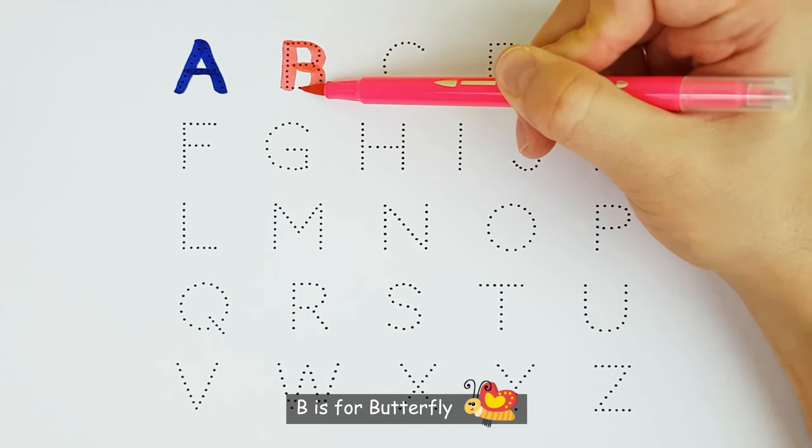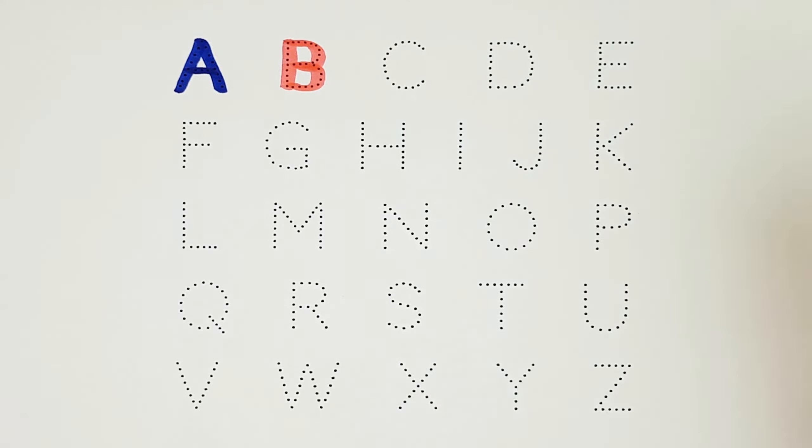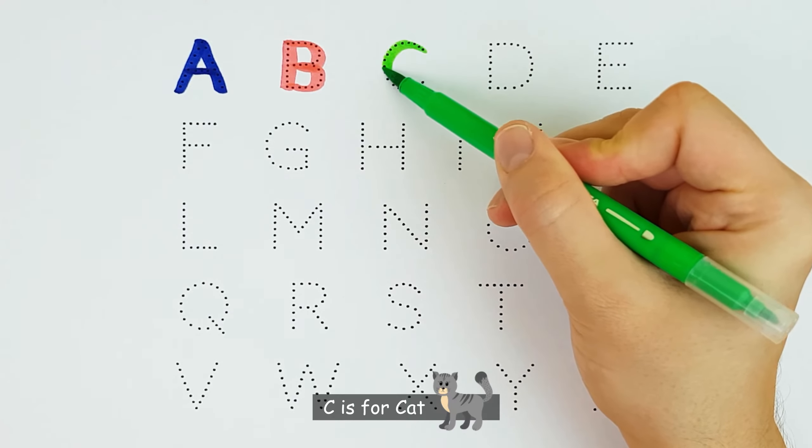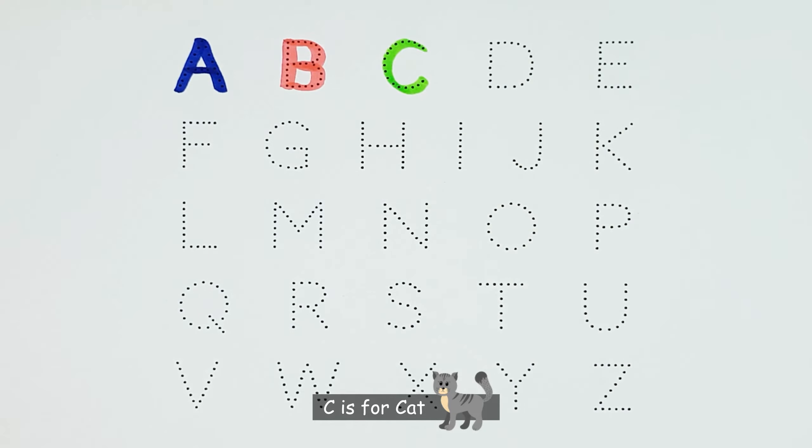A. A is for alligator. B. B is for butterfly.